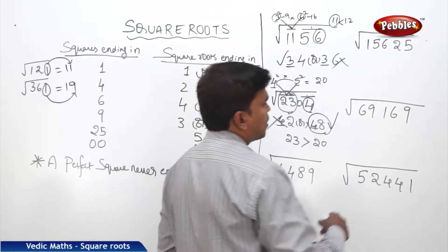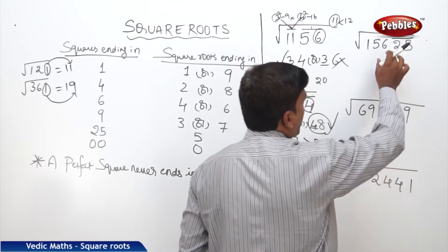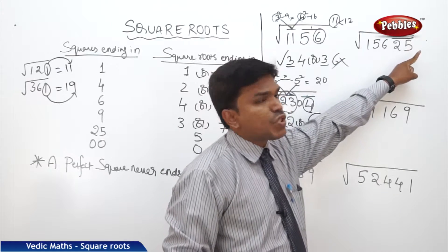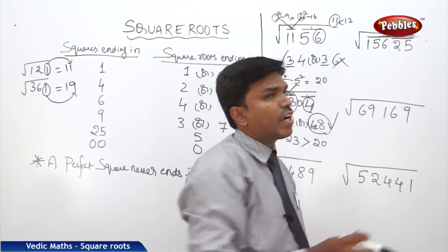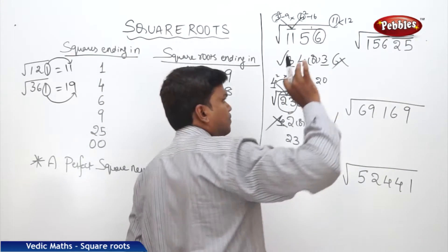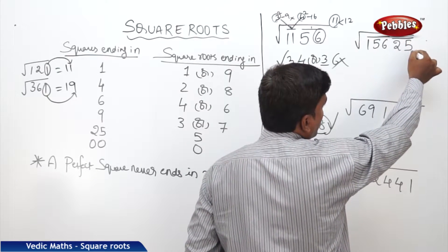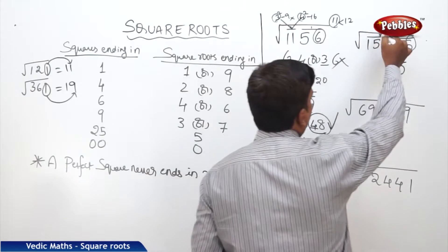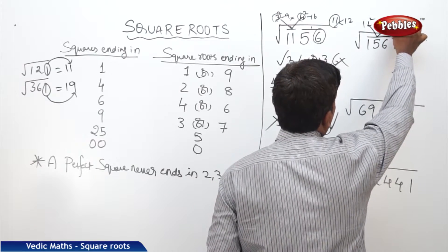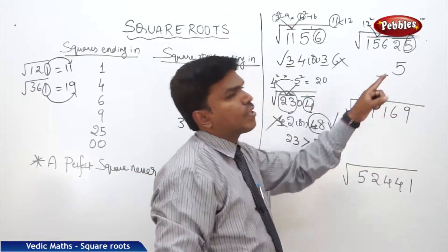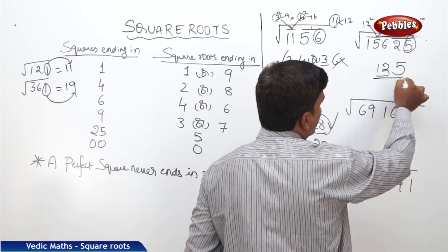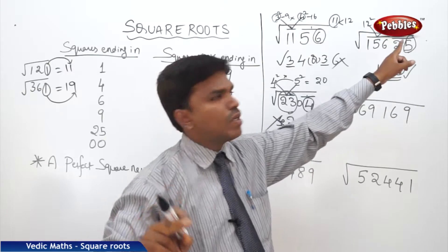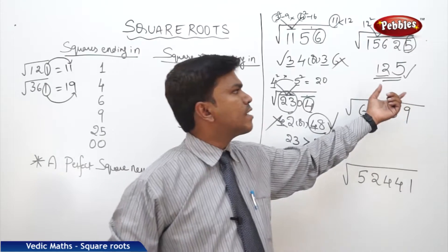I will solve one more problem. For a five-digit number, start from the right side — first take two digits, then take the remaining three digits at a time. The square number is ending in 5, so the square root also ends in 5 — only one possibility. Come to the second partition: 156. 156 falls between 12 square and 13 square. The left side is always filled with the lesser number, which is 12. So my answer is 125. Directly, the answer is 125.